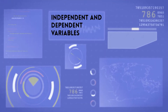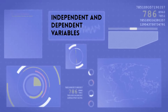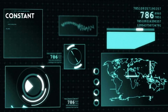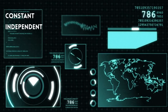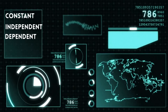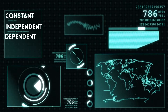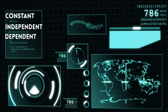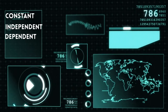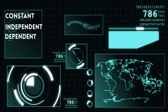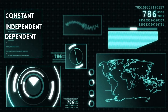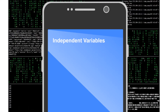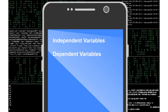In a science experiment, you have three variables: the constant variables, the independent variables, and the dependent variables. The constant variables are variables that don't change. In this video, we will focus on the difference between the independent and dependent variable.